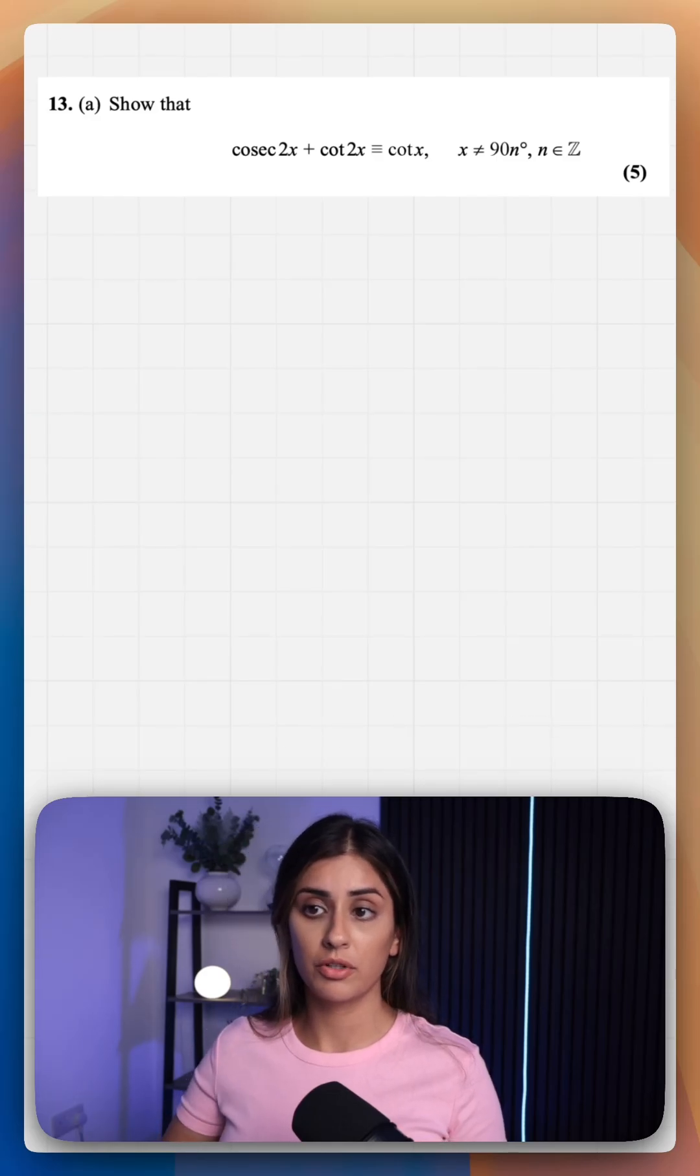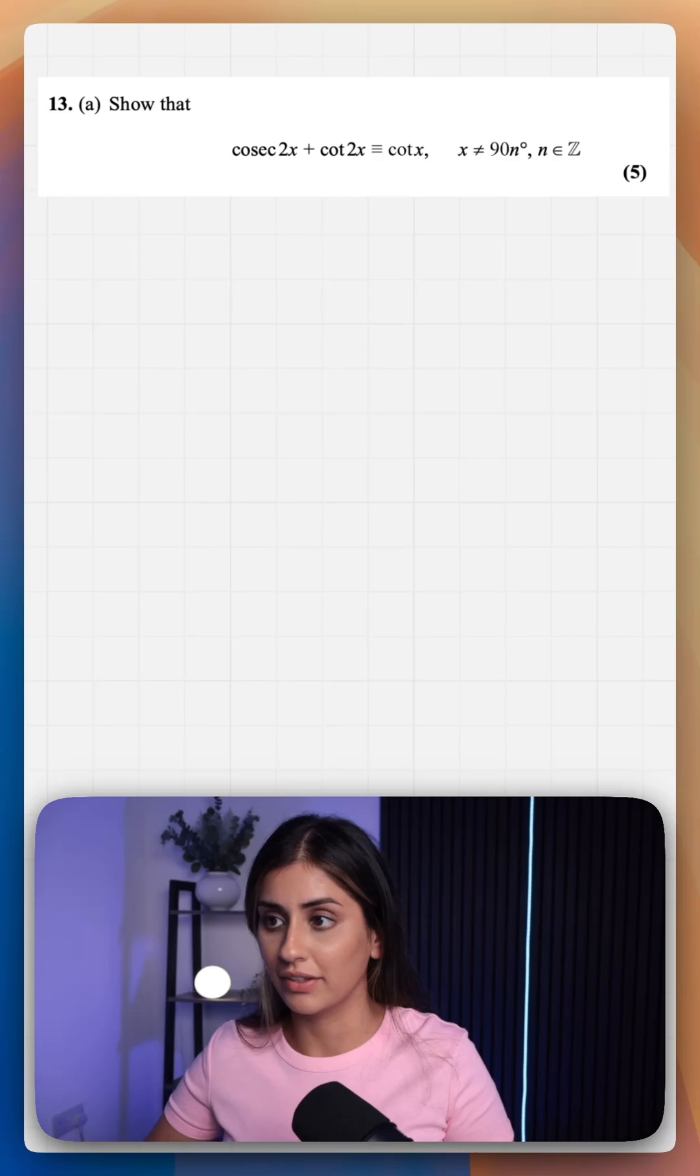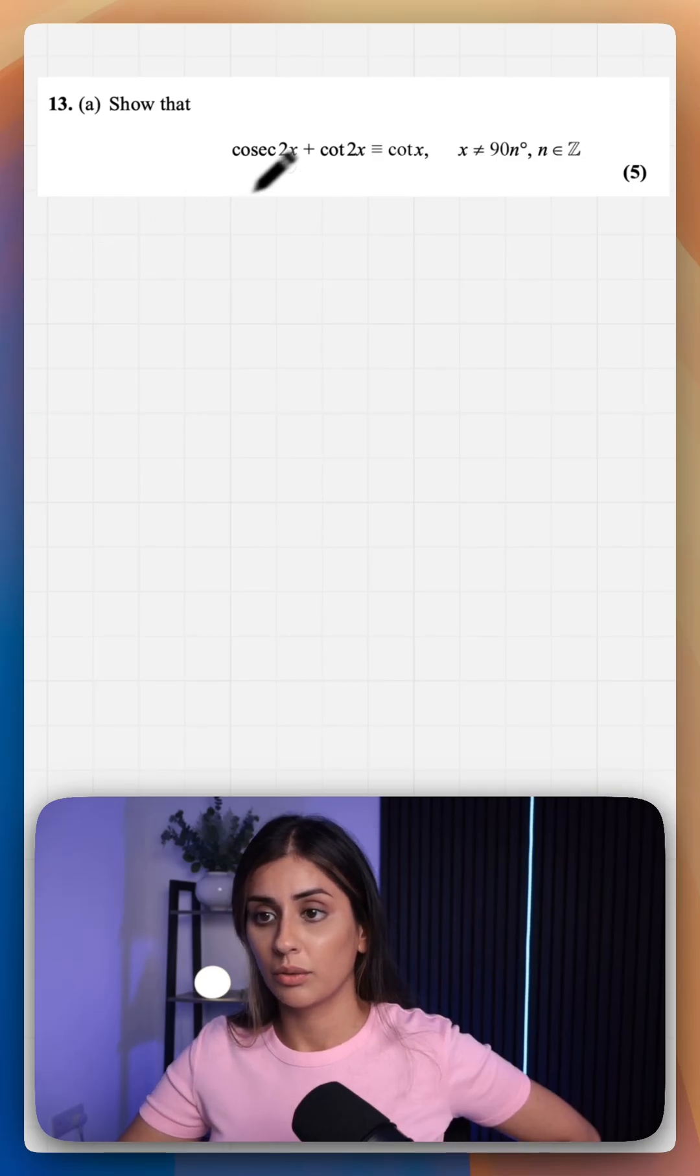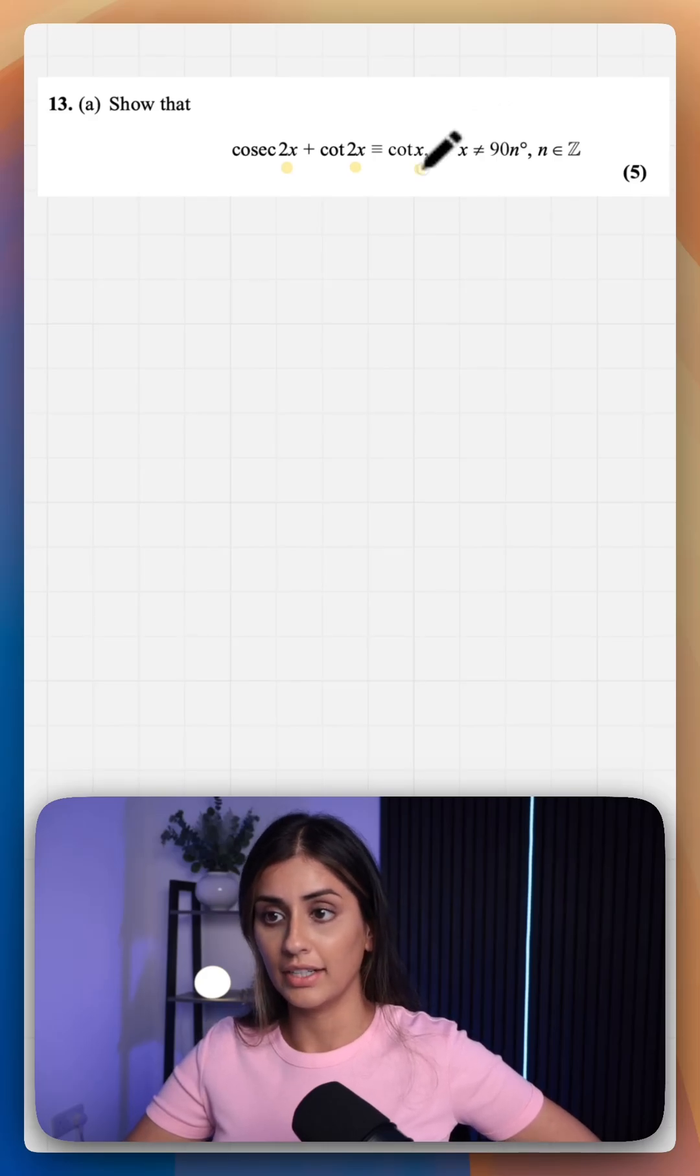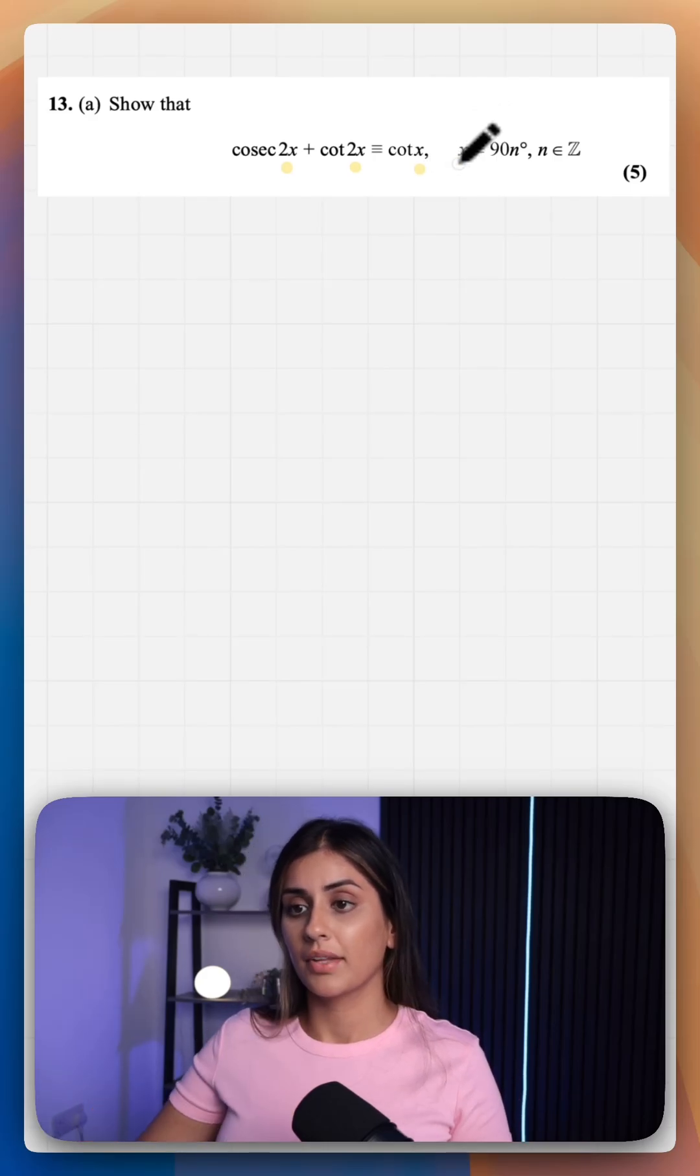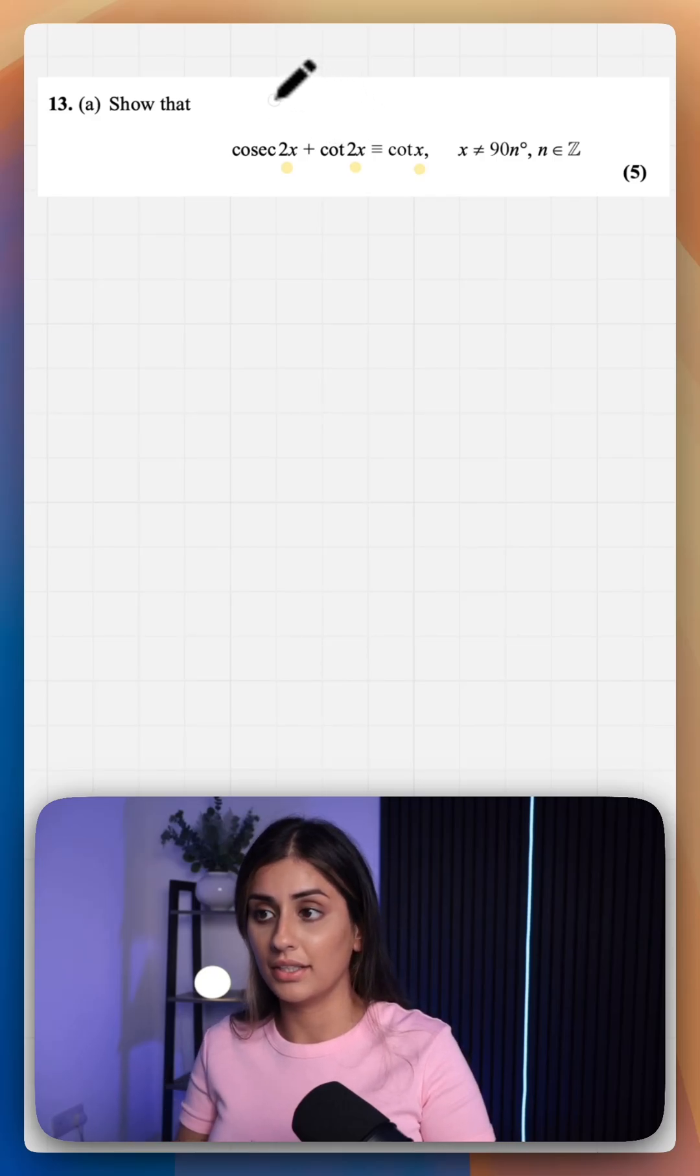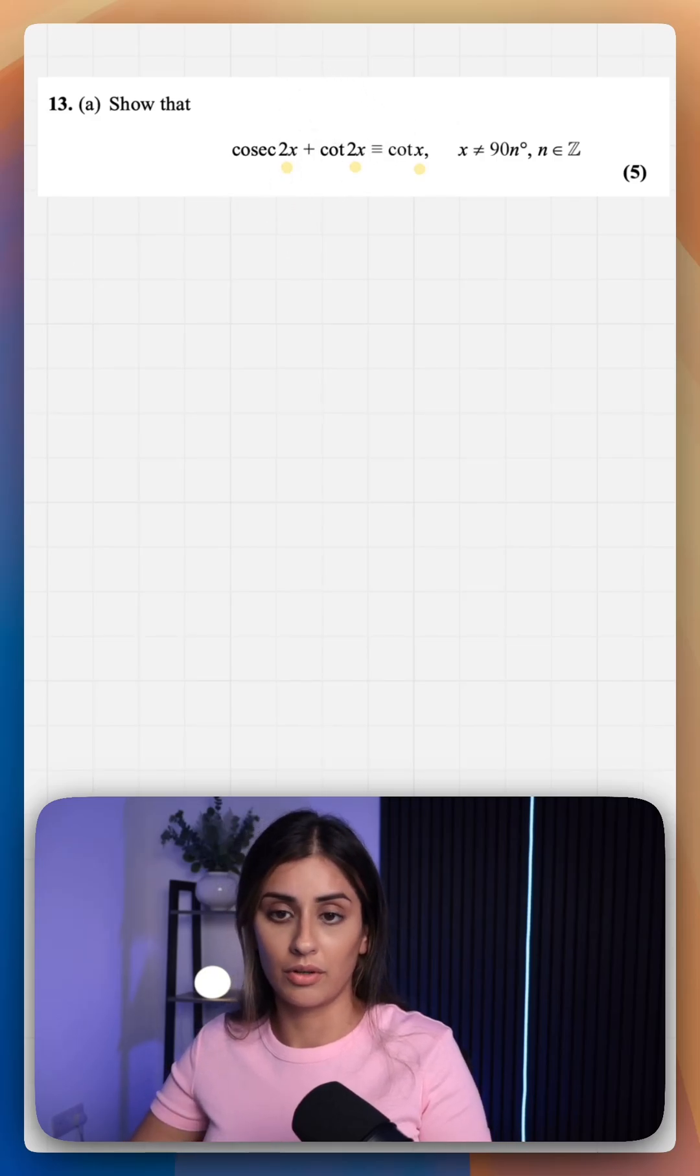When you are working through a proof you naturally want to start on the more complicated side and start simplifying your work. You also want to compare angles and number of terms. On the left hand side we have double angles and on the right we have singular, so we probably need to use some sort of double angle formula. We also have two terms on the left, so we may need to combine these together at some point to get one term.